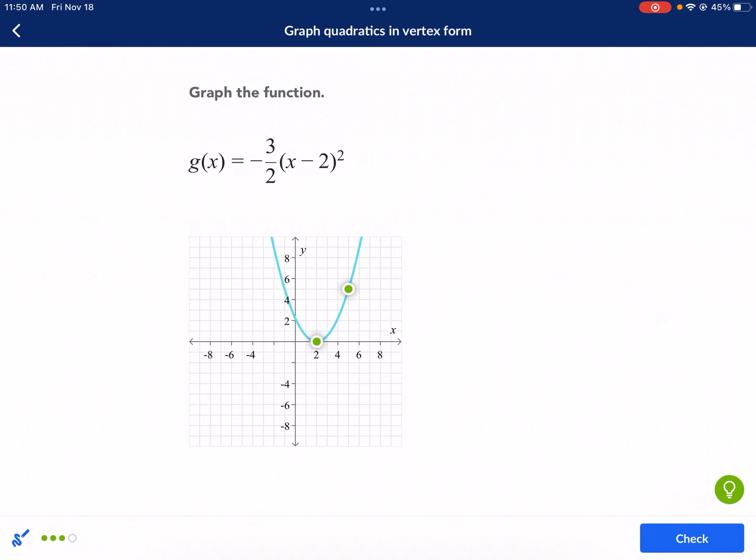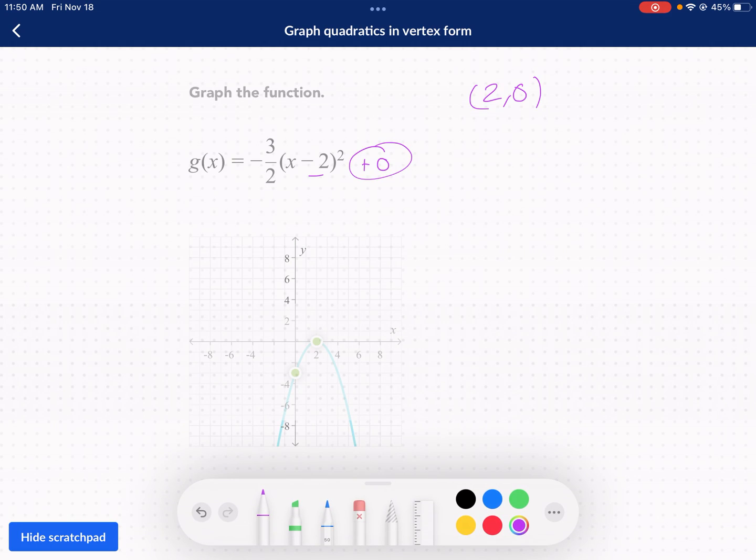I know it opens down. So my other point is going to be here. I'm going to see if I can get a Y intercept here. I think I'll be able to. So I get 0 minus 2 squared. And then I multiply by the negative 3 over 2. And that is equal to Y. So we get negative 3 over 2 times negative 2 squared. That's going to be positive 4 times negative 3 over 2. And I'm going to cancel out the 4 with the 2. 2 is going to be left. So I have negative 6 equals Y.